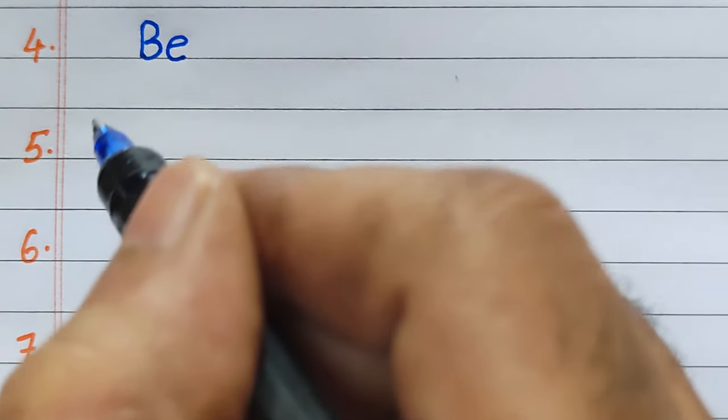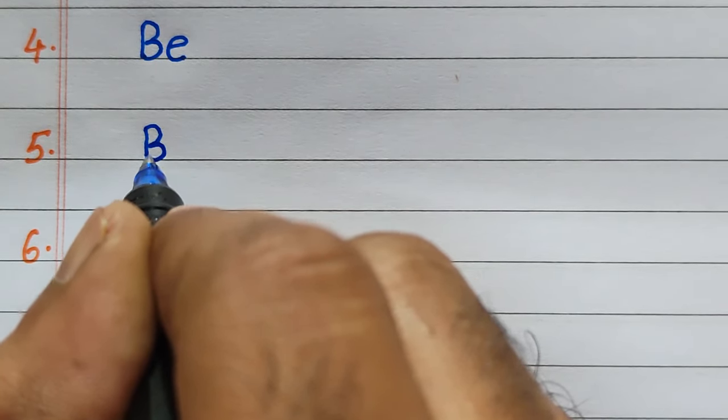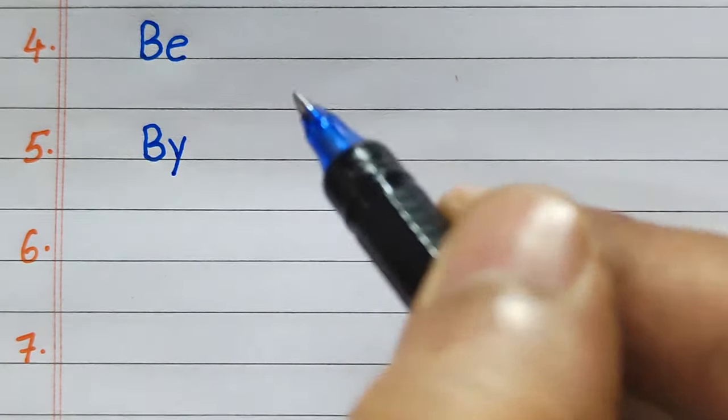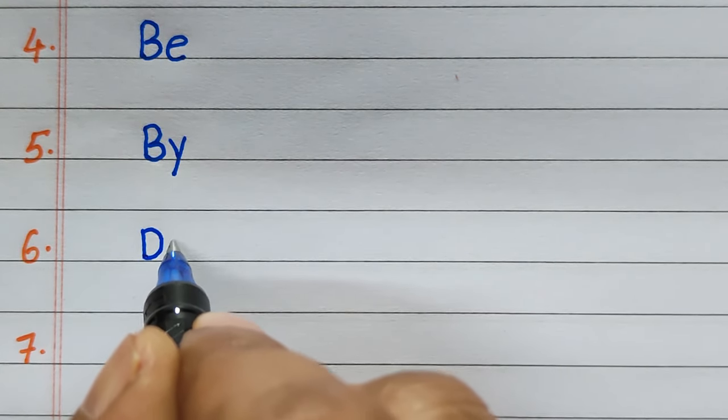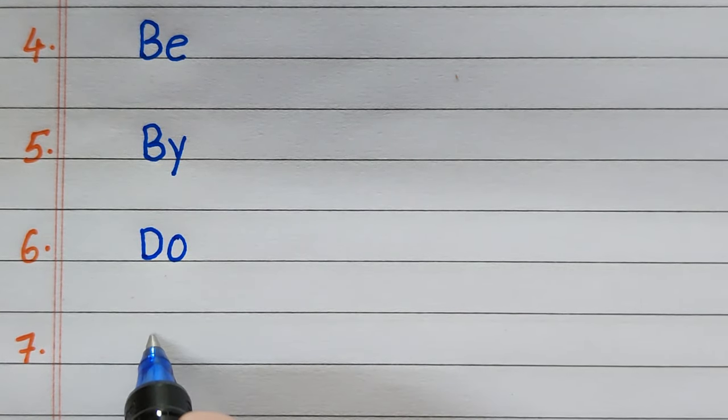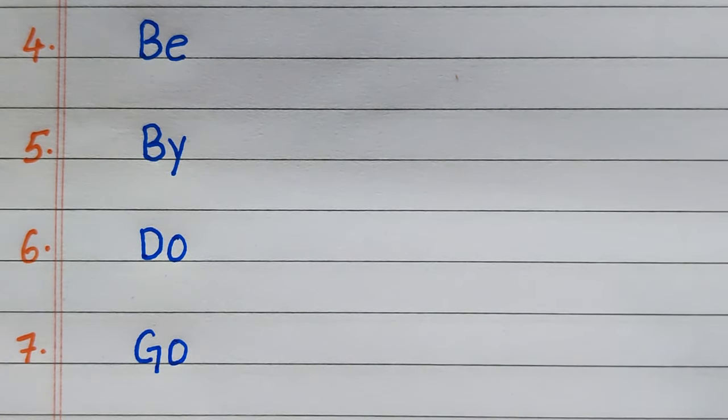The fourth two-letter word is BE. The fifth two-letter word is BY. The sixth two-letter word is DO. The seventh two-letter word is GO.